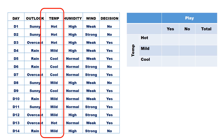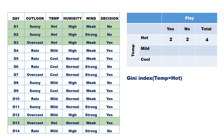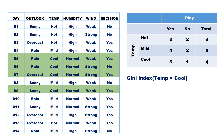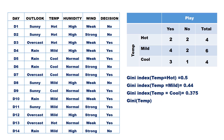Similarly, we compute the Gini index for the attribute Temperature. Gini index for temperature=hot is 1 minus (2/4)² minus (2/4)², which equals 0.5. Gini index for temperature=mild is 1 minus (4/6)² minus (2/6)², which equals 0.44. Gini index for temperature=cool is 1 minus (3/4)² minus (1/4)², which equals 0.375. The Gini index of Temperature is the weighted sum: (4/14)×0.5 + (6/14)×0.44 + (4/14)×0.375, which equals 0.439.